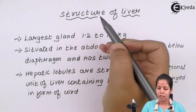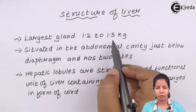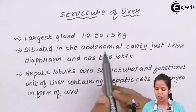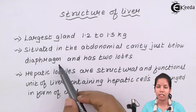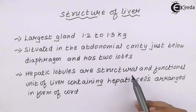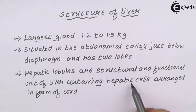Structure of Liver: Liver is the largest gland and it approximately weighs 1.2 to 1.5 kg in adult human beings. It is basically situated inside the abdominal cavity, just below your diaphragm, or you can say the respiratory system — basically the ribcage. It has two different lobes. The hepatic lobe is basically the structural and functional unit of liver; in simple language, the smallest cells of the liver are nothing but hepatic cells that are arranged in the form of a cord or ring-like structure.